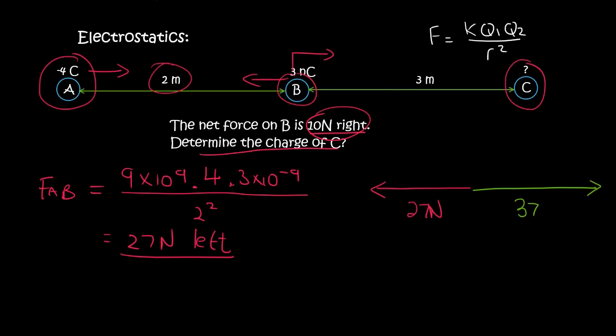Well, C would have to be 37 newtons, because 37 to the right minus 27 to the left gives us 10 newtons right.